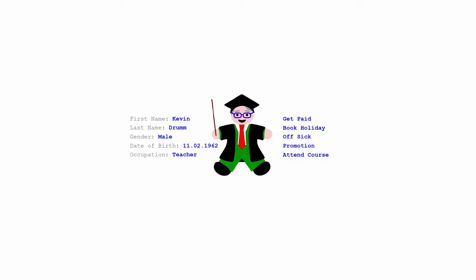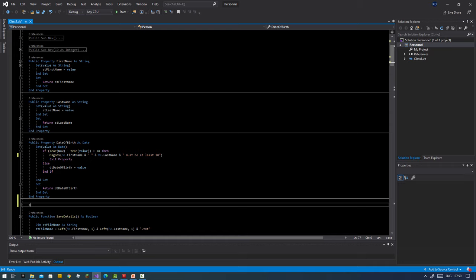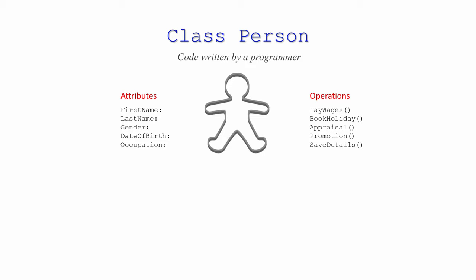To create objects programmatically you need a class. A class is a template for creating objects — code written by a programmer to define the attributes and the operations of an object. Attributes describe the object; they're sometimes referred to as fields because they contain data, but most programmers know them as properties. Properties are coded within the class either as public variables or as property procedures. Operations are actions that can be done to or performed by the object; they're sometimes referred to as behaviours, but more commonly they're known as methods. Methods are programs within the class that are coded either as procedures or functions.